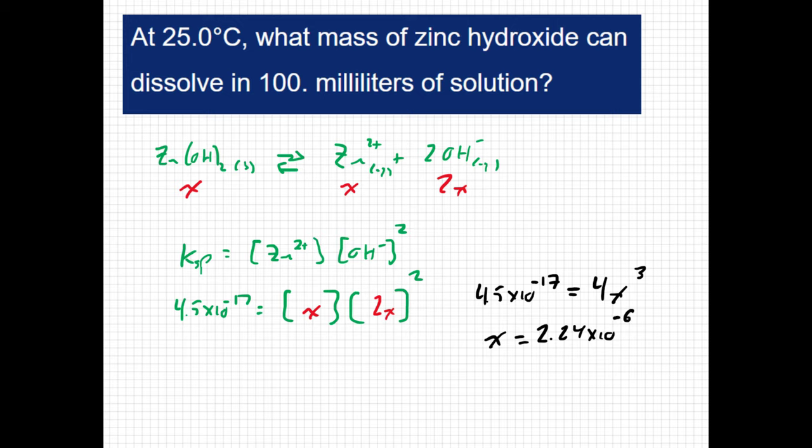And x is representing a concentration here, just like it did in the last problem. So that's going to be molarity. Now the question is not asking for concentration, the question is asking for the mass of solute. So if I know my concentration, then I can find the moles. I can say 2.24 times 10 to the negative 6 molar equals my number of moles over liters, and then 100 milliliters, I get 0.1 liter. So that's going to be 2.24 times 10 to the negative 7 moles of zinc hydroxide.